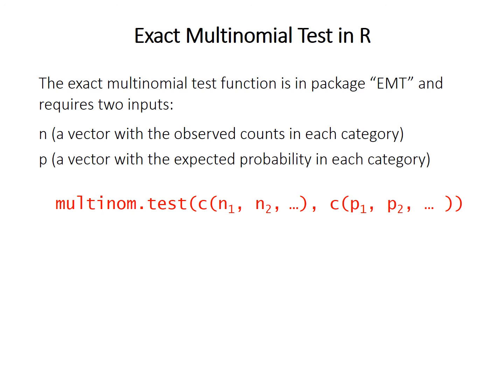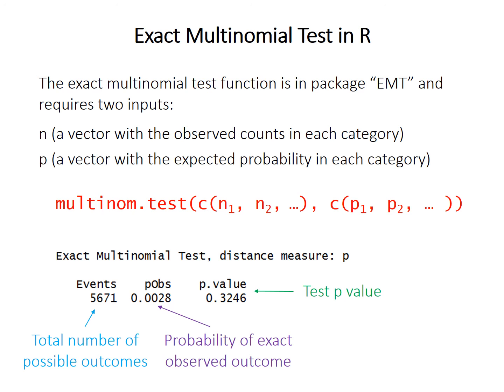In the output, the key piece of information is again the p-value. The results also list the total number of possible outcomes and the probability of observing the exact result you got, but you don't need to include those when reporting results. Make sure you're reporting the p-value of the test, not the p-value of the exact outcome — the p-value is defined as the probability of observing an outcome at least as extreme, not just your specific observed case.